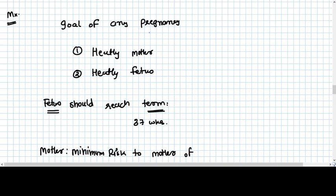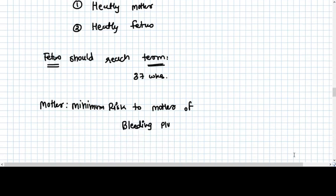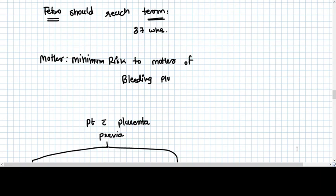Here also what we need is we need a good fetus, we need a healthy mother also. So we try that the fetus should reach up to term, after 37 weeks. The pregnancy should reach at 37 weeks and we should prevent fetus from prematurity, meanwhile we are taking very minimal risk of mother.